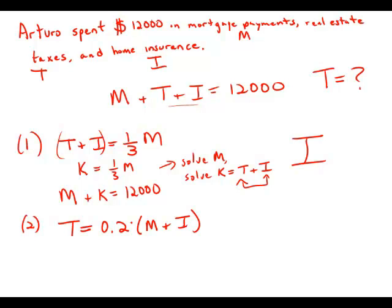OK, well, a similar trick. Now we're going to glom together M and I and I'm just going to call that that's some quantity Q. So T equals point two times Q.